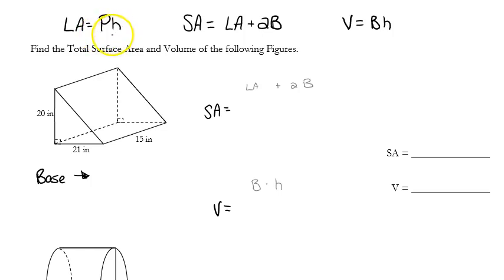H is the height, which is always the distance between your two bases. SA is your surface area, sometimes we'll see that as TA for total area, and that's going to be your lateral area plus two times capital B, which is the area of your base. V is your volume, area of your base, and the same height as with the lateral area.